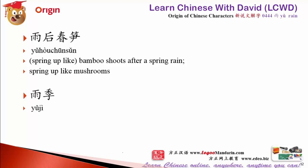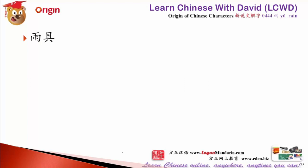雨季 means rainy season. In Malaysia, from October to March is 雨季, the rainy season in tropical areas. From March to September is 旱季 — not so many rains. But now the weather has changed a little bit, it's very hard to tell the difference. 雨季旱季, 一年四季.